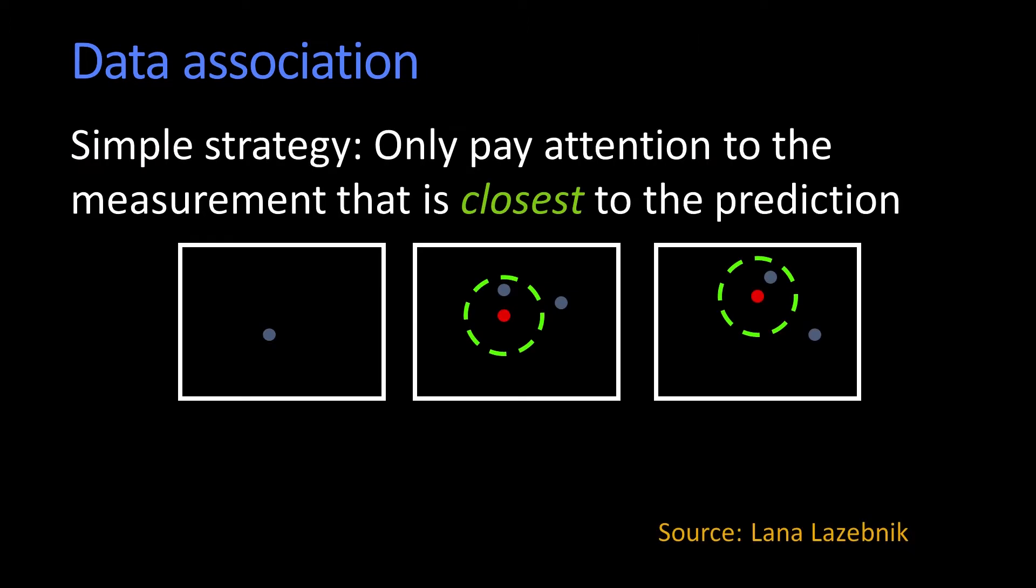So there is a simple strategy, and that's what's indicated here. I've got a point, and I've got state, and now I take some measurements. I might just associate the closest measurement to my prediction.